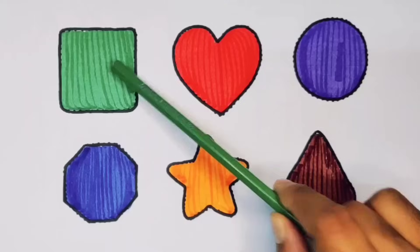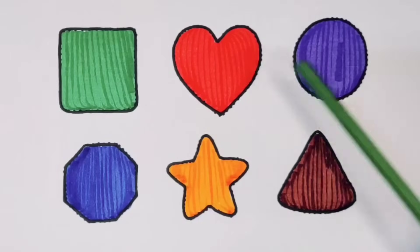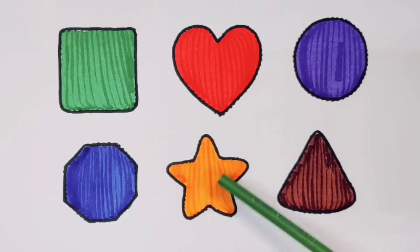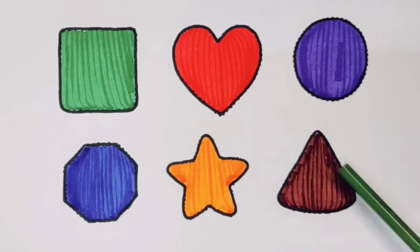We learned Green color Square, Red color Heart, Purple color Circle, Blue color Decagon, Orange color Star, Chocolate color Triangle.